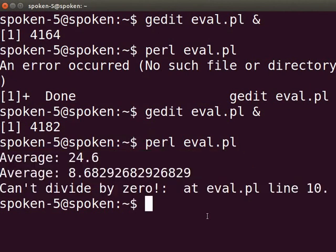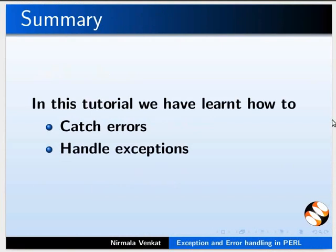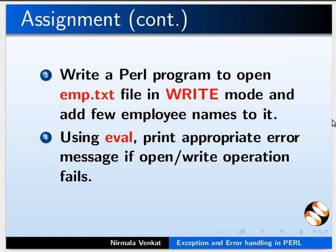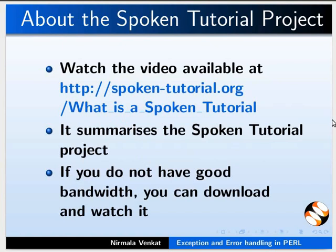This brings us to the end of this tutorial. In this tutorial we have learnt how to catch errors and handle exceptions. As an assignment, do the following: on your Linux machine, create a file emp.txt with 5 employee names. Change the permission of emp.txt to read only. Write a Perl program to open the emp.txt file in write mode and add a few employee names to it. Using eval, print an appropriate error message if the open or write operation fails.